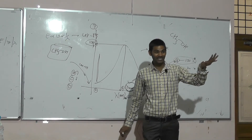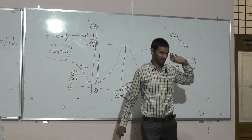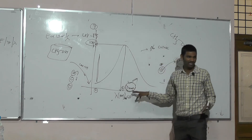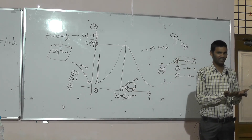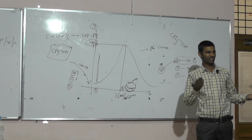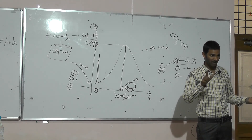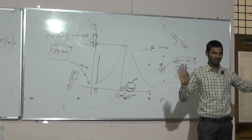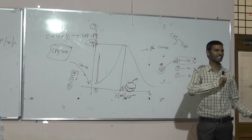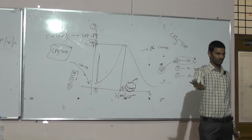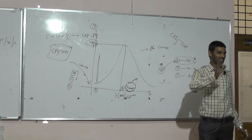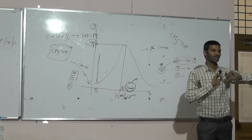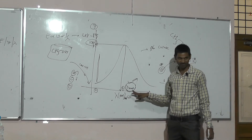Lambda max will not change based on external factors — other factors may influence, but not lambda max. For example, if the lambda max value were to change based on an external factor, there would be no significance to lambda max. The significance is that upon addition of external factors, there is no change in the lambda max. The lambda max value remains constant in any condition; if it changes, there is no qualitative aspect.